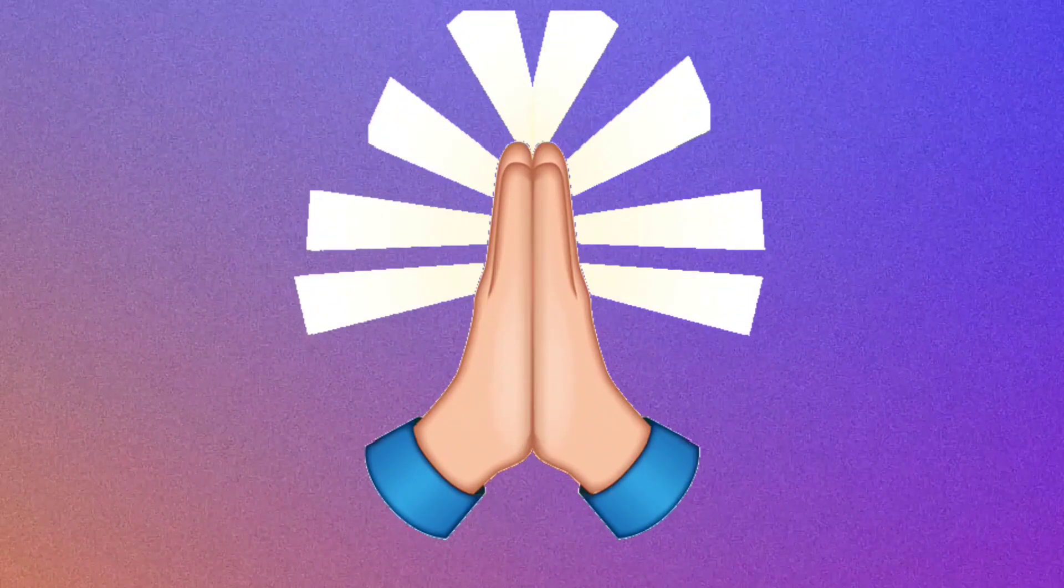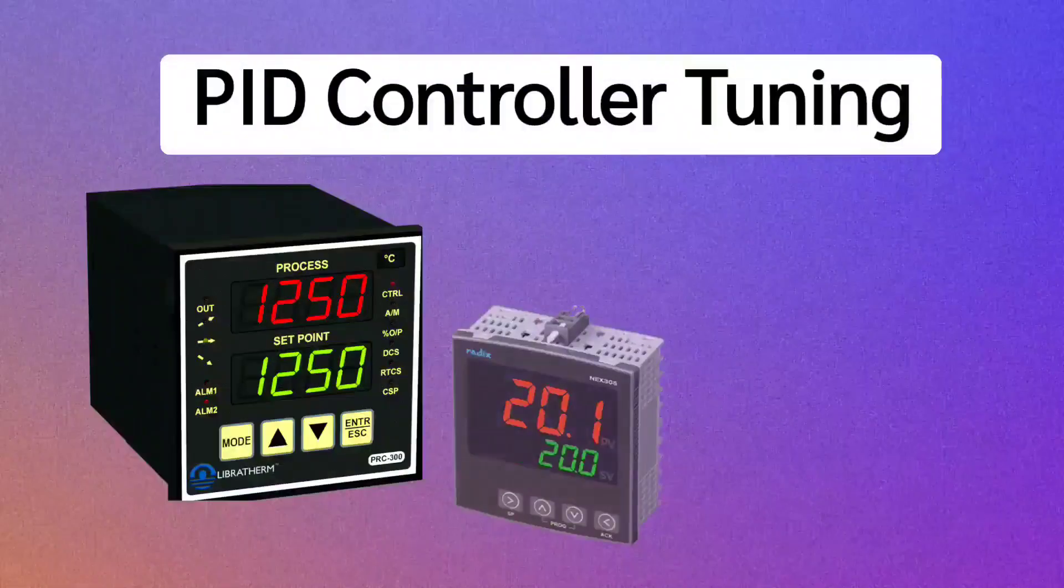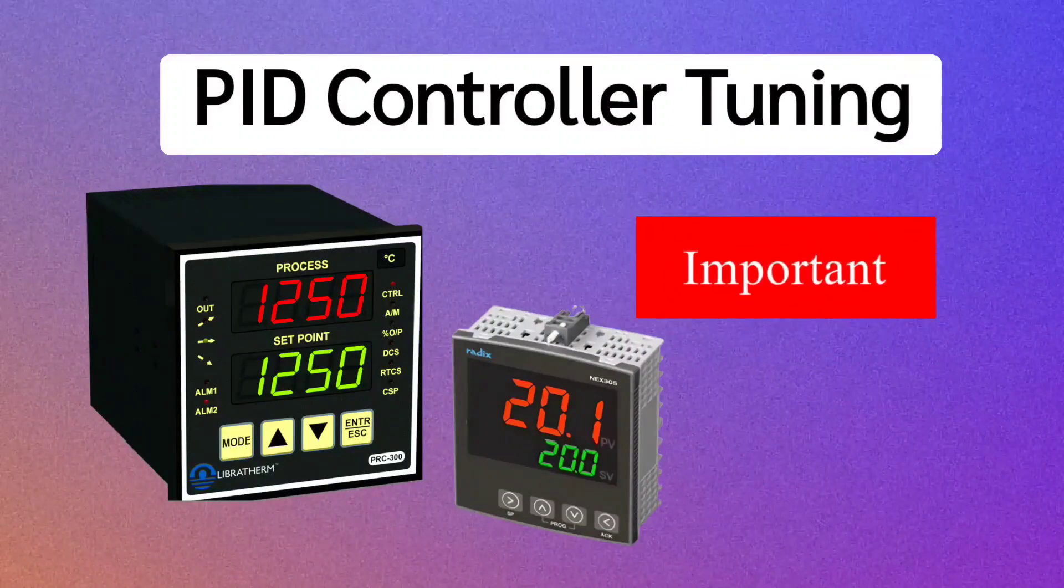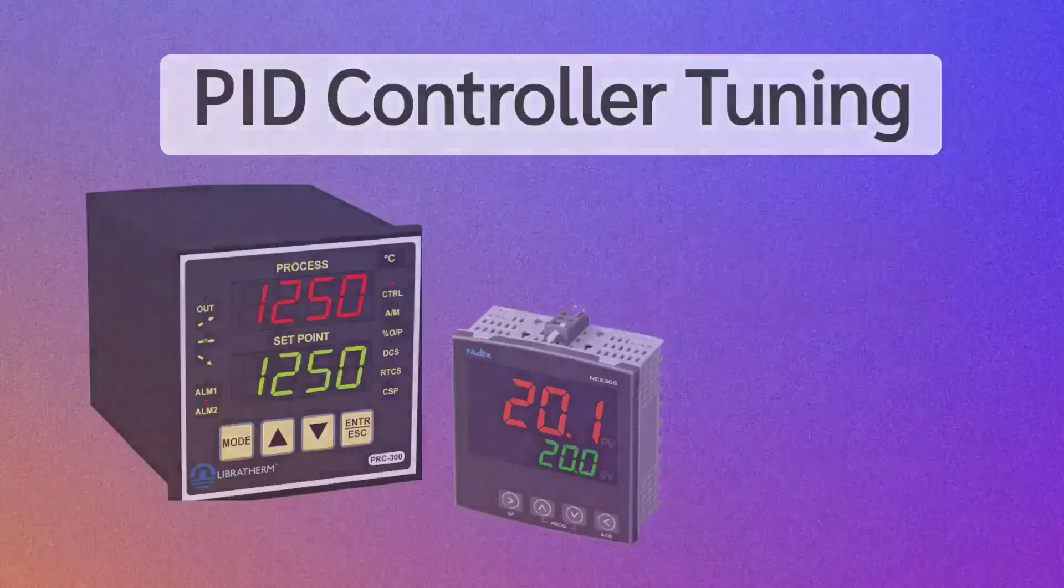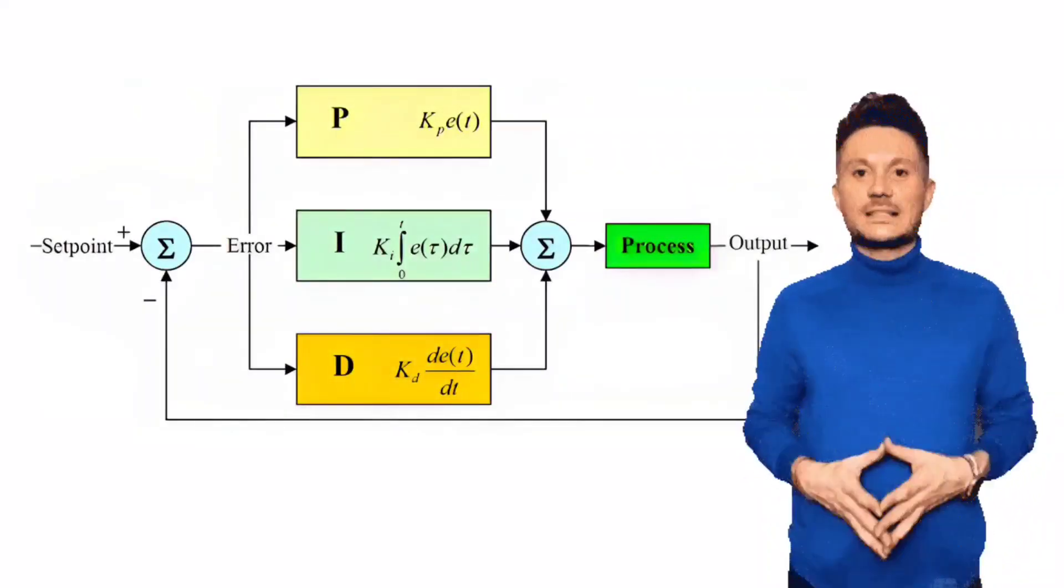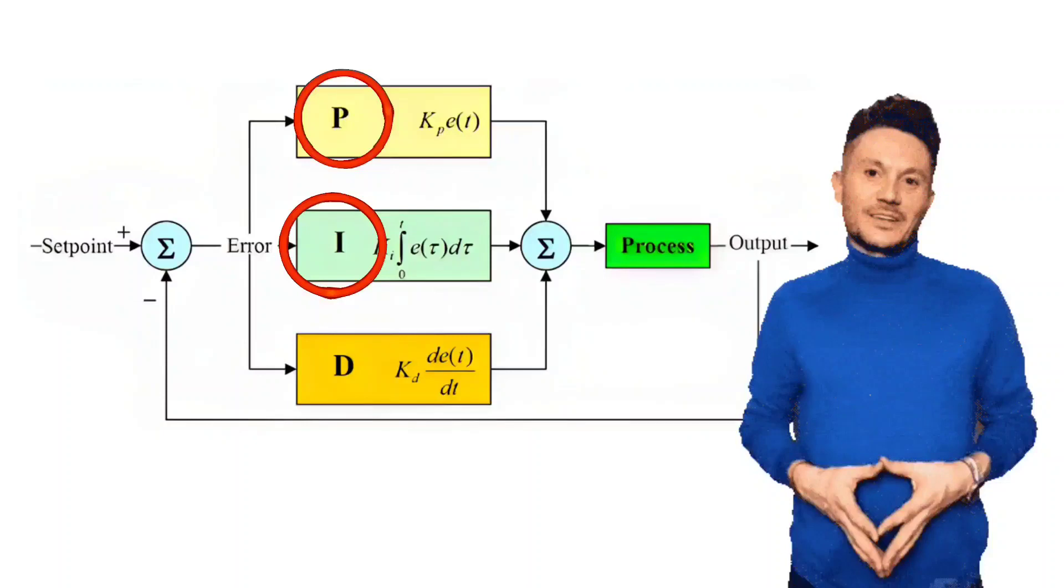Hello friends, today we will talk about PID controller tuning. In PID controller, the most important is its tuning. In tuning, its three parameters P, I, and D are set.